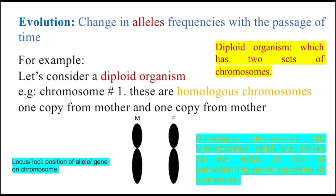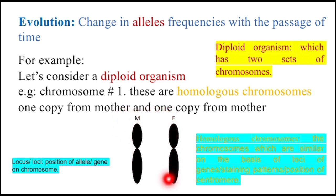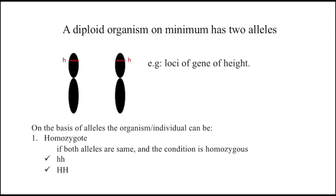Consider a diploid organism. A diploid organism has two sets of chromosomes — for example, chromosome number one. These are homologous chromosomes. A diploid organism has one copy from the mother and one copy from the father. Homologous chromosomes are similar on the basis of loci of genes, staining pattern, or position of centromere. A diploid organism has a minimum of two alleles. Here in red color is the loci of the gene, and these two alleles are the same, represented with small h.